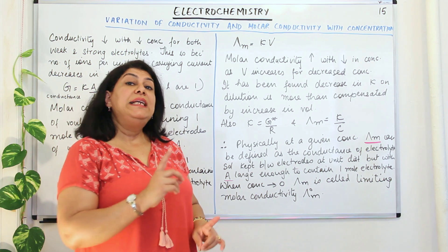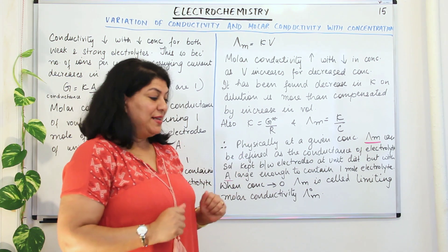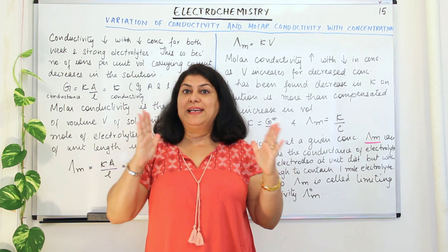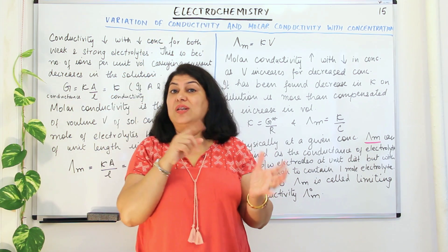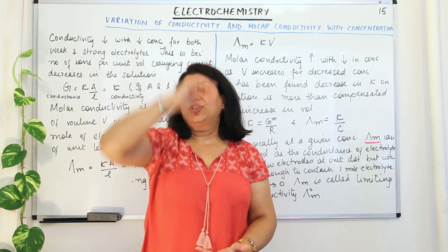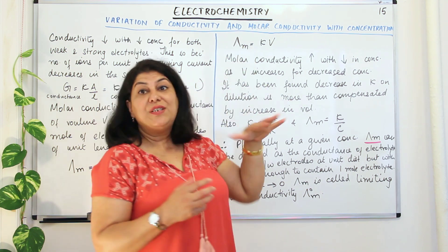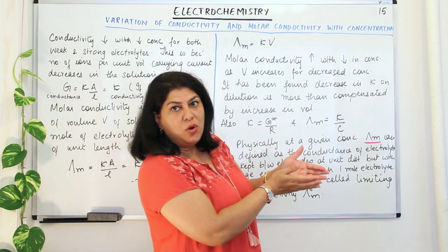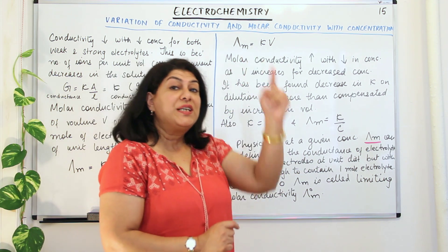Molar conductivity increases with decrease in concentration. The conductivity cell is of unit length. If the concentration is low, the volume increases — one mole of ions would be present in a larger volume, so the area of cross-section is more. As volume increases, molar conductivity increases. And when is volume increased? When the concentration is low. So, molar conductivity increases with decrease in concentration.